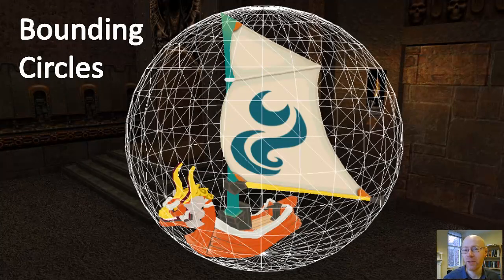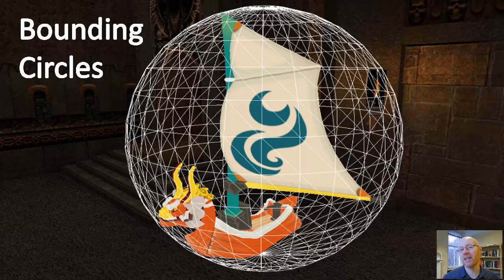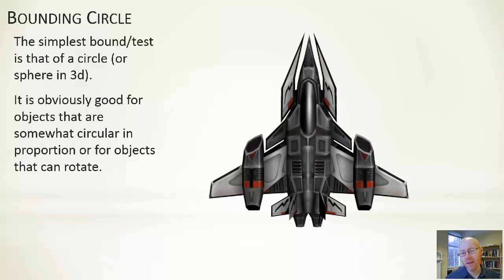Let's look at bounding circles first. They're probably the most simple bound but quite good for a number of reasons: they're very fast and easy to work out if two of them overlap. They're also rotationally invariant — if you bound an object within a circle and the object rotates, it still fits within that circle. It's the simplest bound, works well for roughly circular objects, and is good for objects that can rotate. For a spaceship shown on screen — especially a top-down one that rotates and moves — a circular bound gives a nice overall fit.